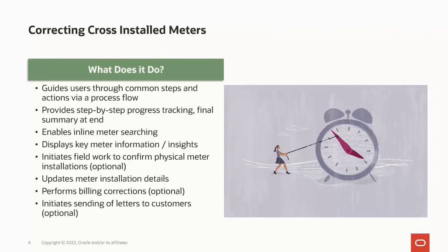It displays informational insights highlighting key information related to the meters involved. If required, a user can initiate field work to be undertaken to confirm cross-installed meters. The meter installation details for each meter can be automatically updated to correctly reflect the service points they are physically installed at. If required, billing corrections can be initiated to correct previously billed charges for each customer, involving cancelling and re-billing historical bill segments and or creating adjustments. Finally, customer contacts can be automatically created if configured to do so, to initiate the sending of letters to each customer involved, to advise them of the outcome.